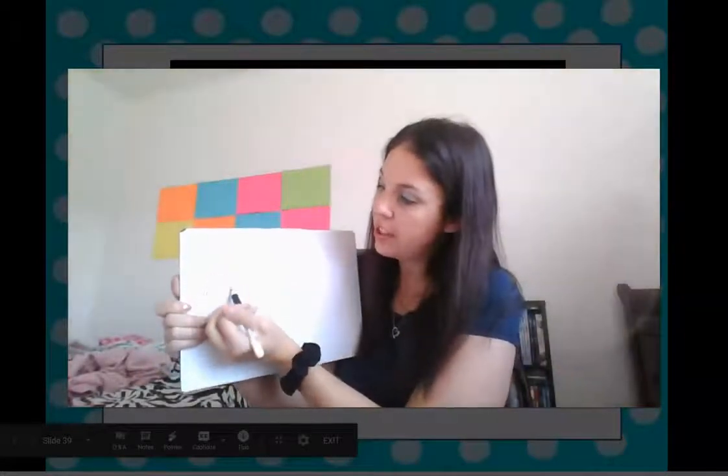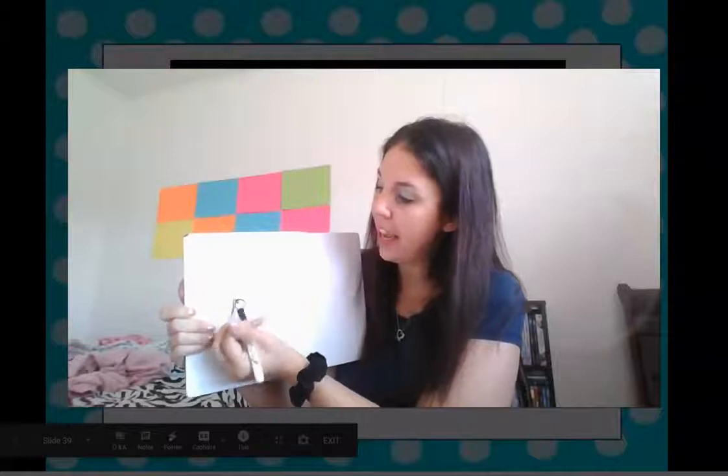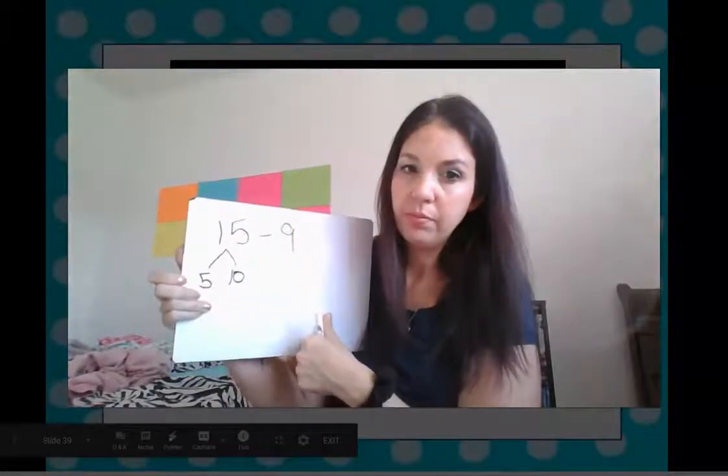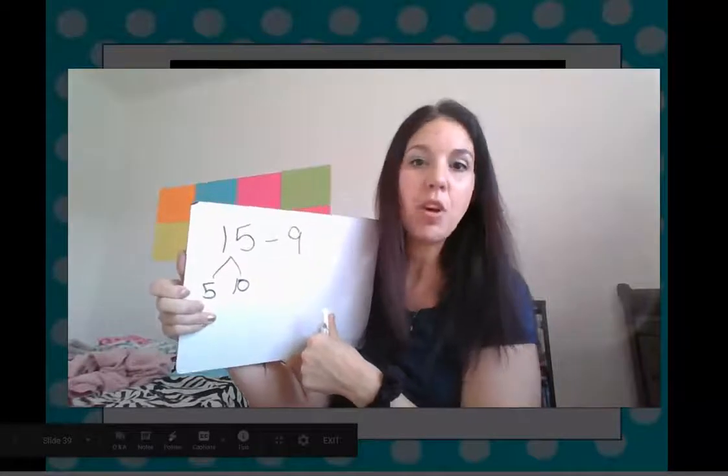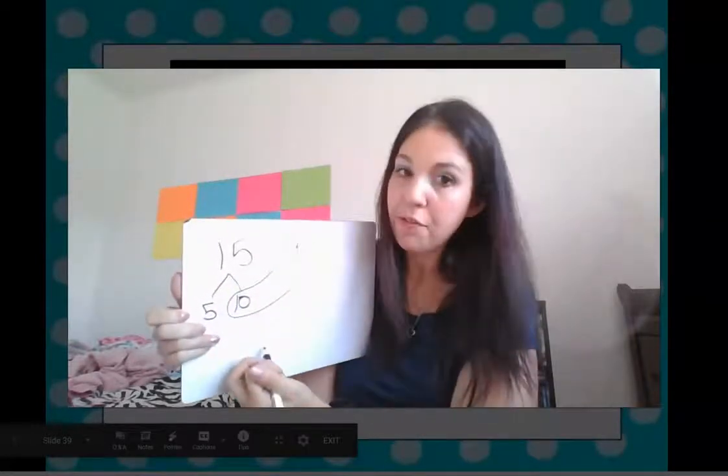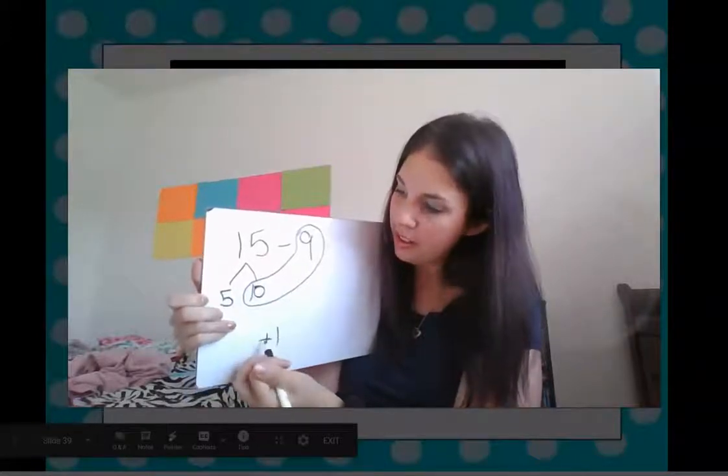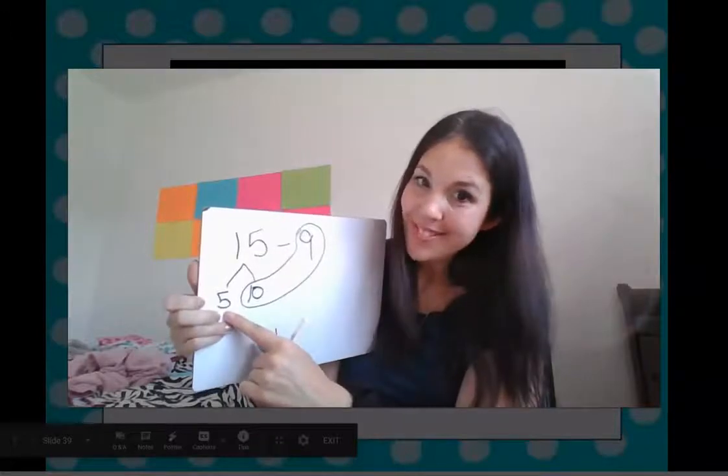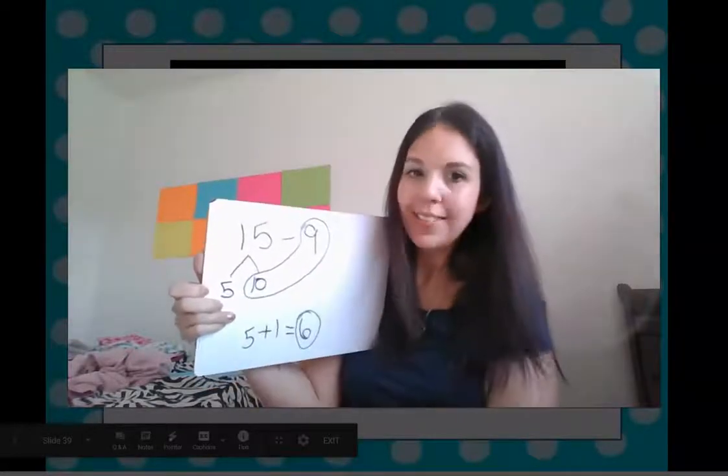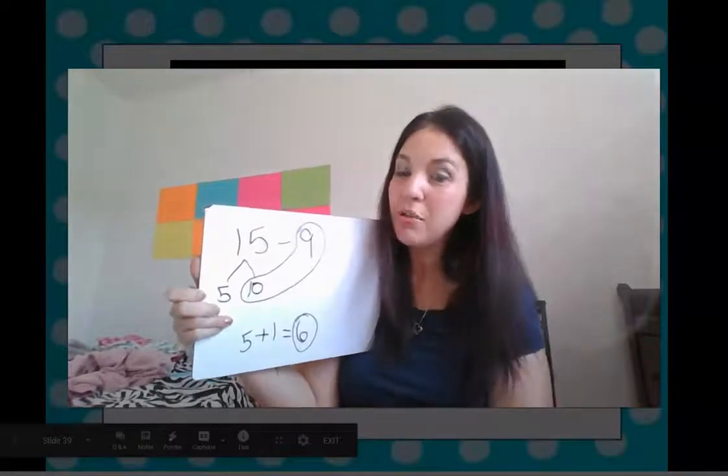Now let's look at our whiteboard. 15 minus 9. We're going to decompose our 15 into a 10 and a what? What number am I going to write right here? A 5. That's right. Good job. And then what should I do? I'm going to subtract 9 from 10. So I'm going to take 9 from 10 and I'm going to be left with 1. Very nice. And I need to add it to what number? 5 plus 1 equals 6. Did we get the same answer? Yes, we did. You can do either strategy.